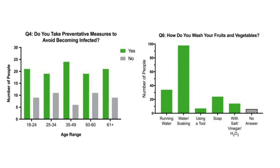Here are two more survey questions. I wanted to know whether people take preventative measures toward becoming infected. A majority of people said they do actively take preventative measures, which is great. So then I wanted to know how they were preventing rat lung disease, and I asked how they wash their fruits and vegetables. A majority of people said water, mainly soaking, but only about 35 people correctly specified running water as their method of washing. Why is running water the most effective? The force of the water is what dislodges any slugs or snails from your produce, and that's how you prevent infection.